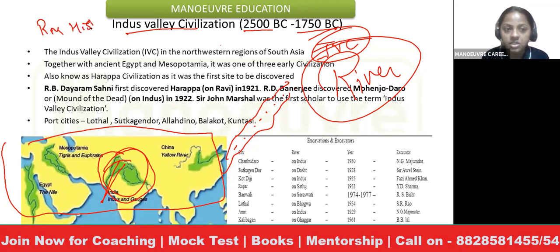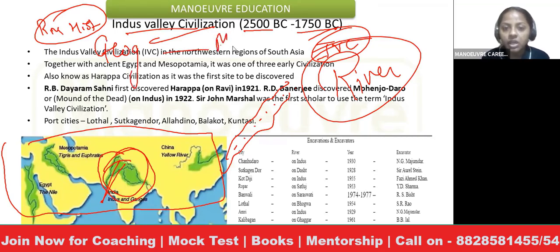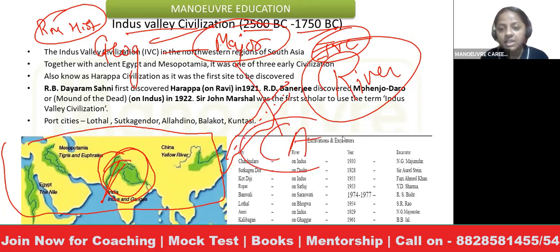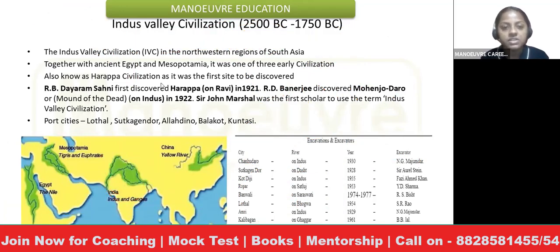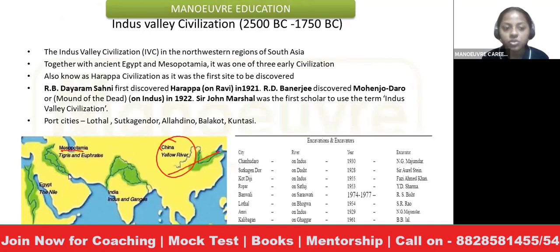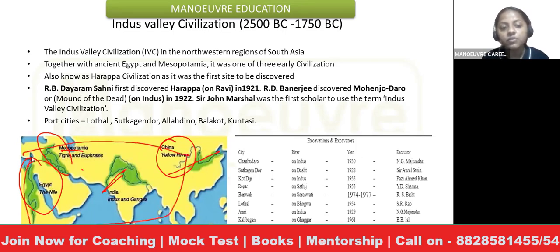These rivers are important not only in history in relation to sites, but also in geography and current affairs — for example, questions about projects and dams always ask which river they are based on. IVC was one of the earliest civilizations, along with China (based on the Yellow River), Mesopotamia (based on the Tigris and Euphrates), and Egypt (based on the Nile River). Similarly, the Indus Valley Civilization was based on the Indus River.